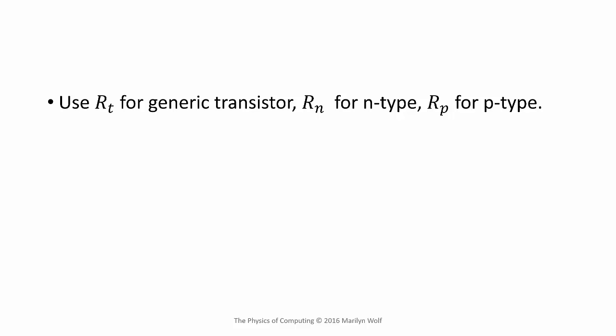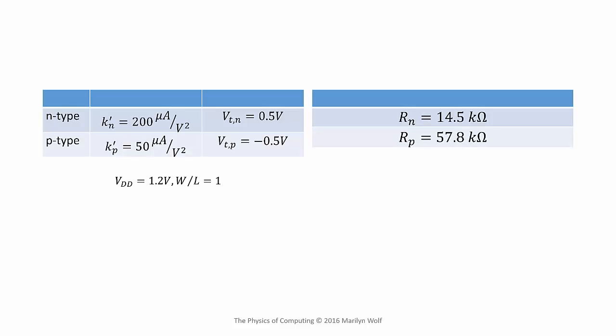We will use the term R_T for a generic transistor effective resistance, R_N for an n-type, and R_P for a p-type. Remember that current scales with L over W — current increases as we increase the width, so the resistance will decrease. Effective resistance scales with L over W. Here are some example values for the effective resistance of a p-type and n-type transistor. The p-type transistor's transconductance is considerably smaller than the n-type's, which means that its effective resistance is higher.